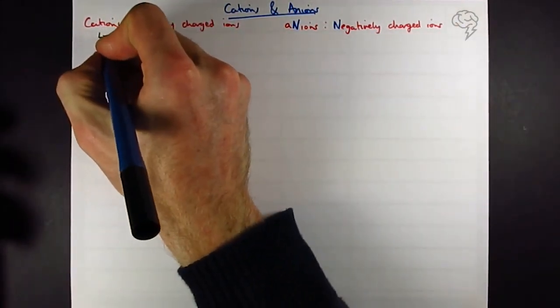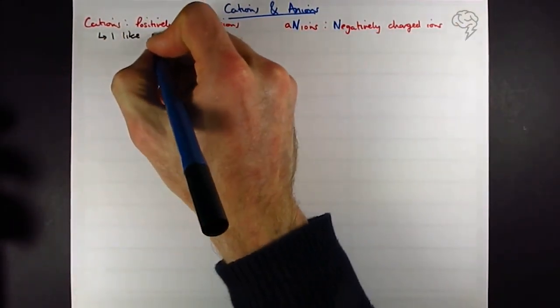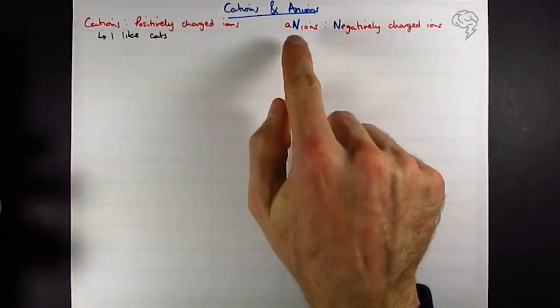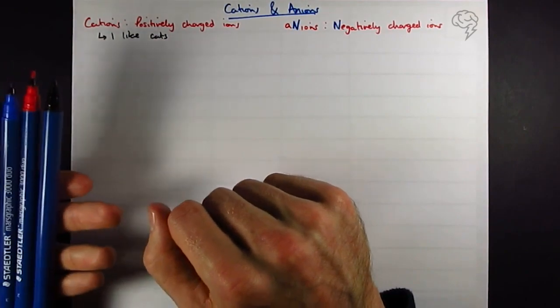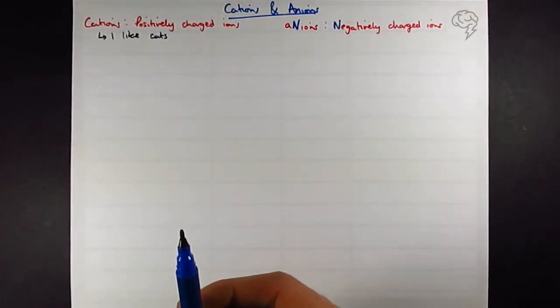Some people prefer cats and just say I like cats, they're positive. I generally go with the n in anion being the one that stands out for me. It's remembering which one's positive and which one's negative.